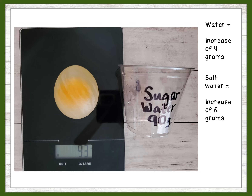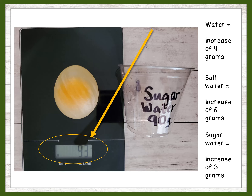Egg three was placed in the sugar water solution. The initial mass of this egg was 90 grams, and the final mass was 93 grams — an increase of only 3 grams, which is 1 gram less than our control. This indicates that sugar water doesn't move as easily across the membrane, and it might actually pull extra water out of the egg.